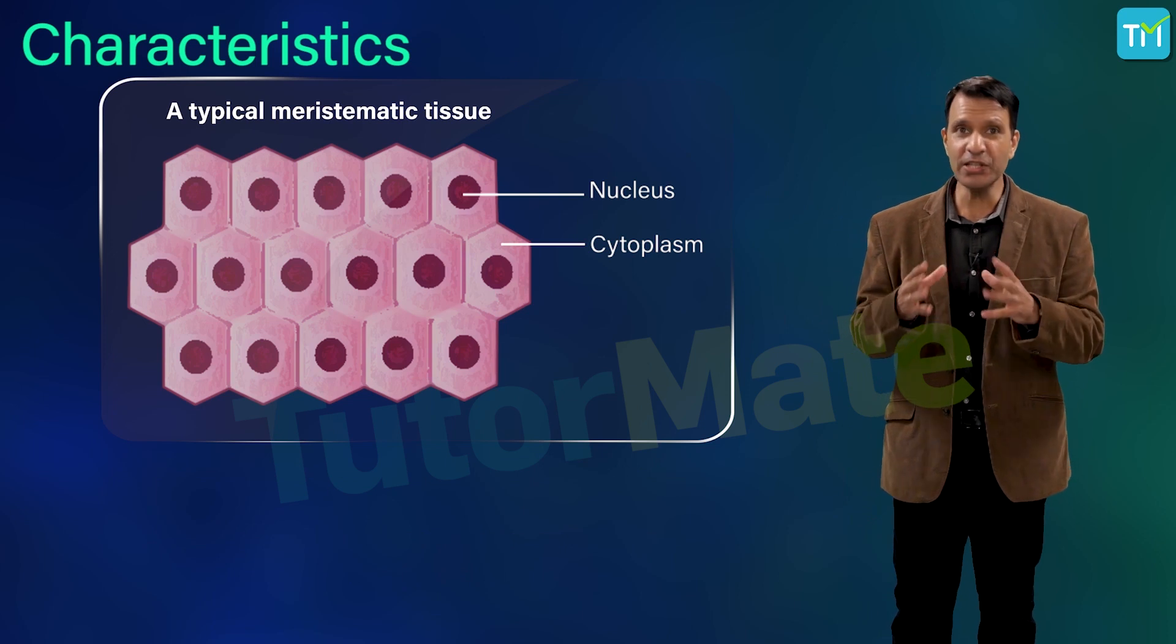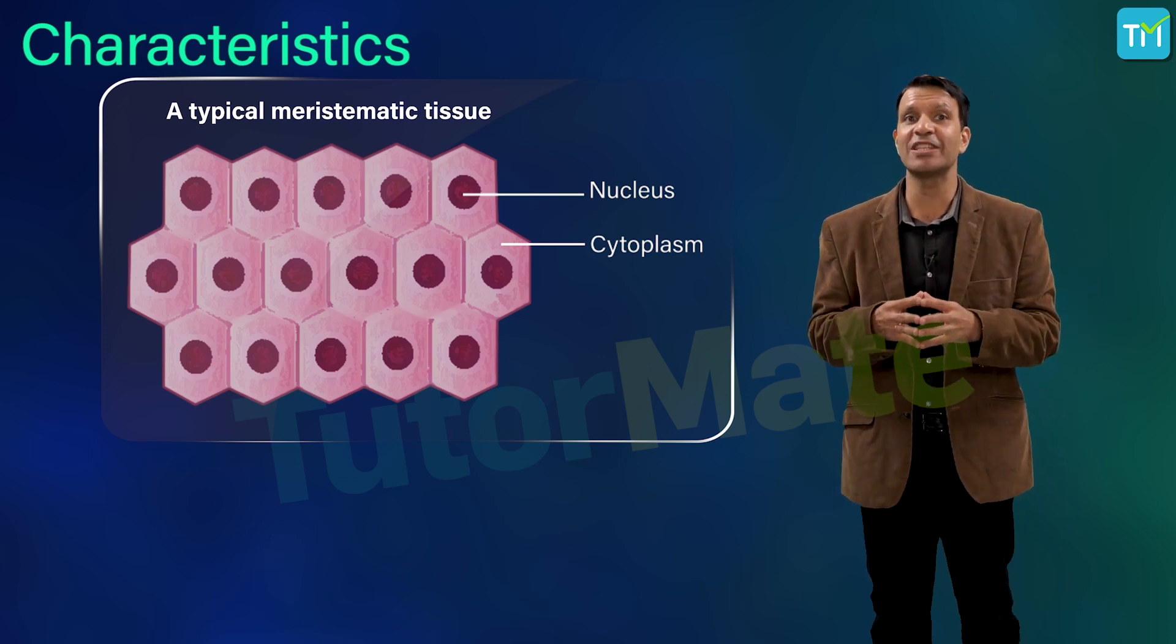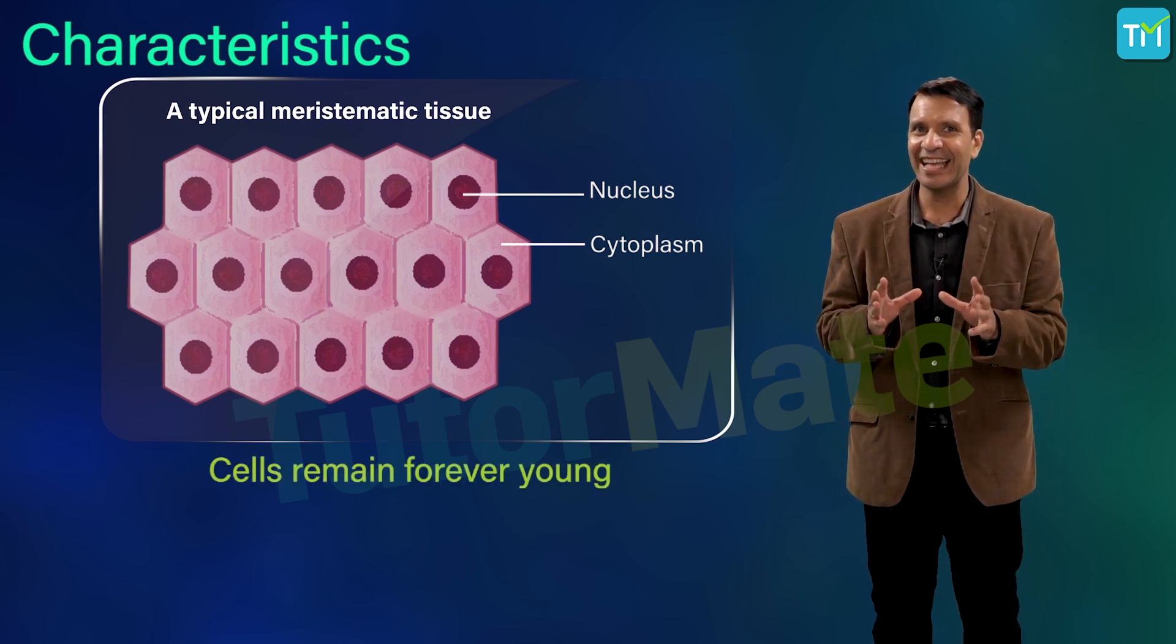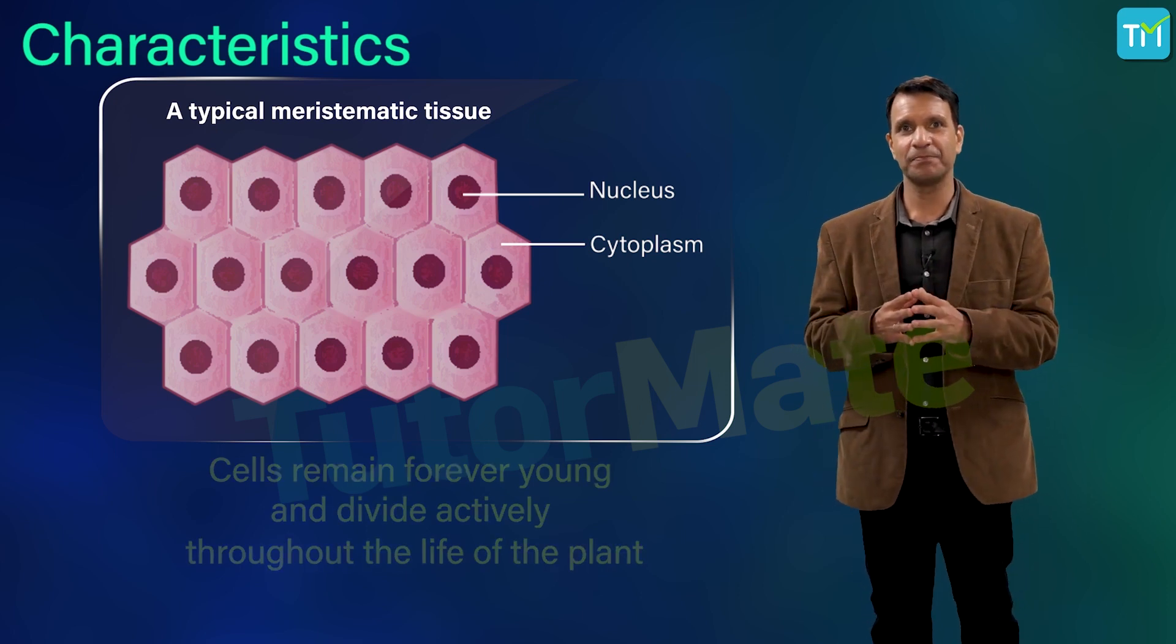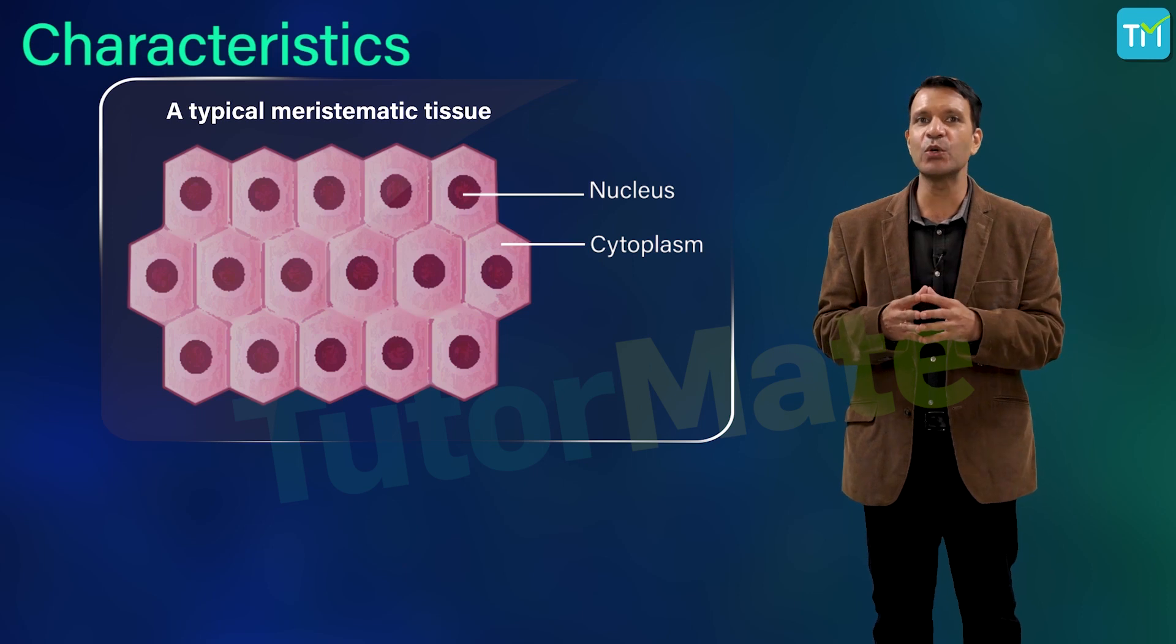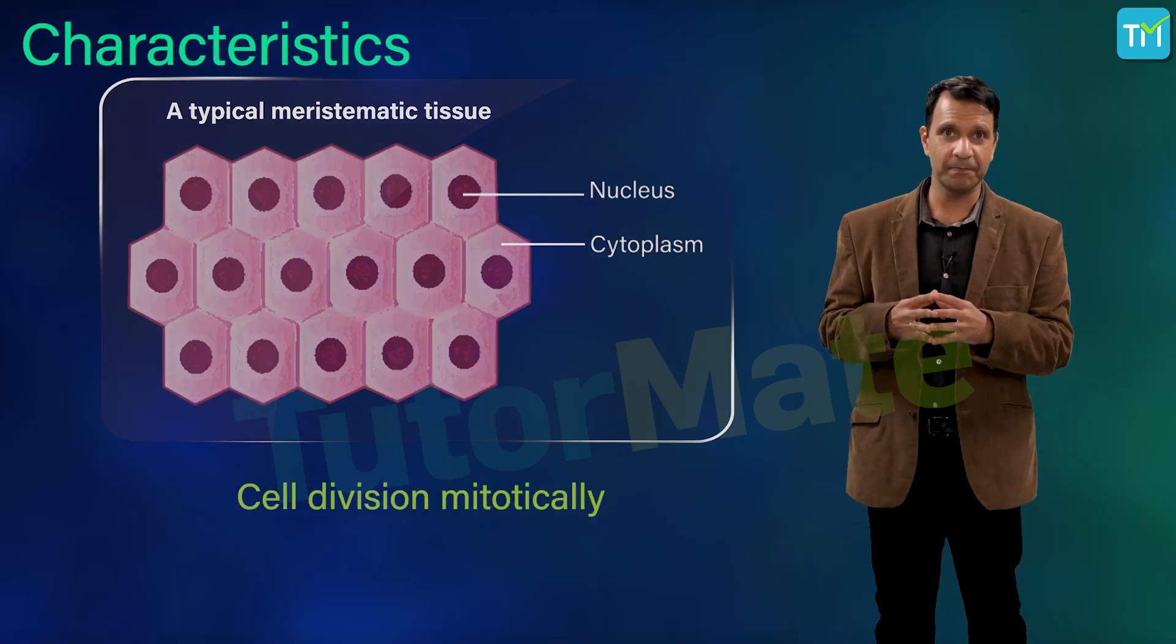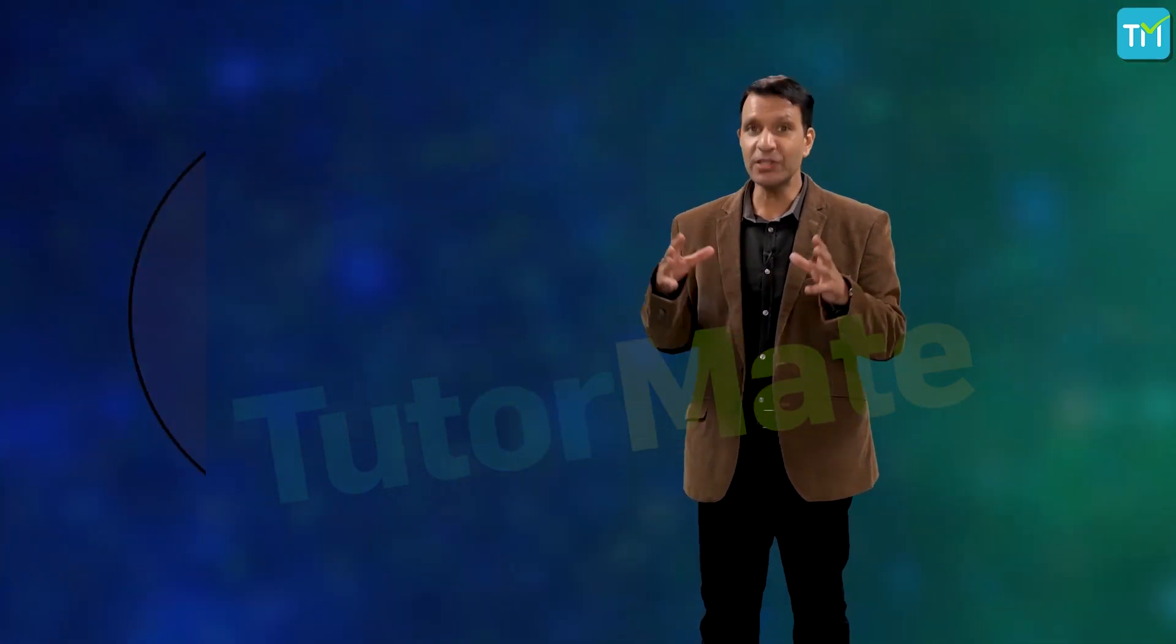In addition, meristematic tissues are tissues in which the cells remain forever young and divide actively throughout the life of the plant. Meristematic cells undergo cell division mitotically. Do you remember what mitotic division is? It is a process of nuclear division in which a parent cell divides to produce two identical daughter cells.